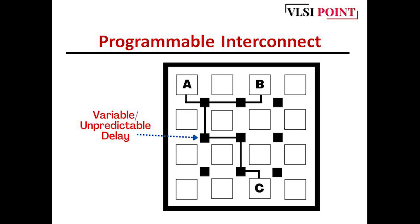Here, after the logic has been placed on the particular CLB, the path needs to be routed. Once the routing takes place, the actual path can be predicted, and the delay can be predicted. This is how this programmable interconnect works.